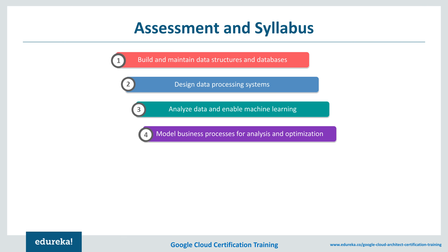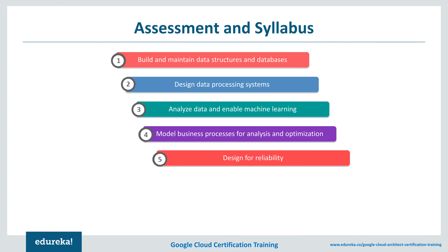The fourth section is modeling business processes for analysis and optimization. The responsibilities include mapping business requirements to data representation, optimizing data representation, data infrastructure, and performance and cost, resizing and rescaling resources, data cleansing, distributed systems, high performance algorithms, and common sources of errors. The fifth section is designed for reliability. It includes responsibilities such as verification, building and running test suites, pipeline monitoring, accessing troubleshooting, and improving data representation and data processing infrastructure. It also includes processes such as recovering data, stress testing, data recovery plans and processes.